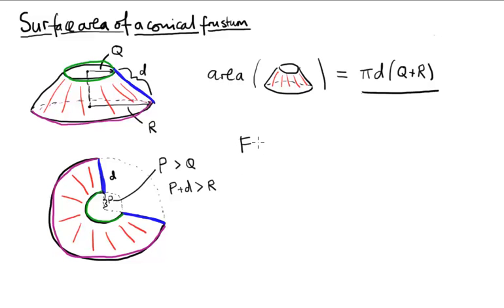So f is the fraction of the annulus subtended by this funny shape. By which I mean, you know, the full annulus would go all the way around this circle. We're actually only going some of the way around the circle. Not quite three quarters. So we'll get some fraction here.